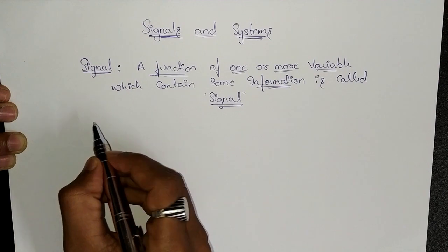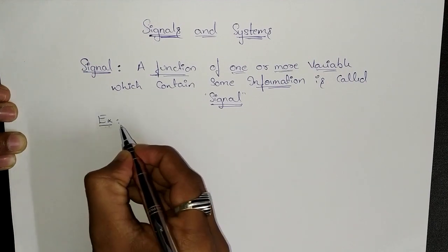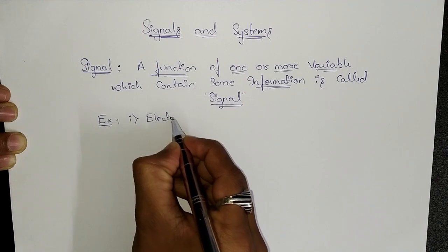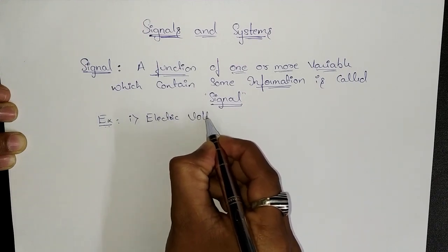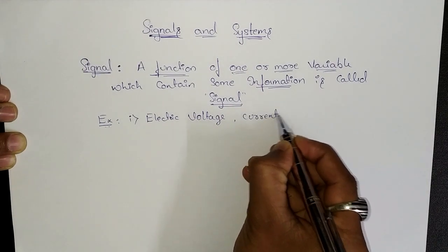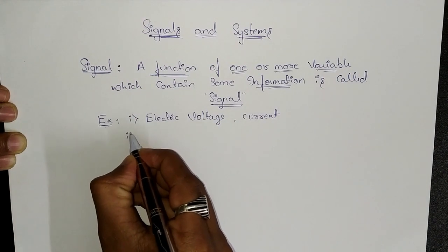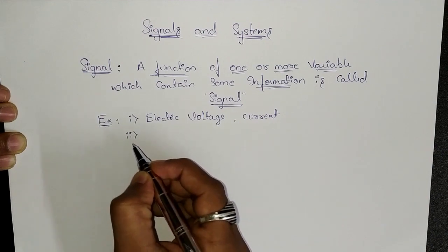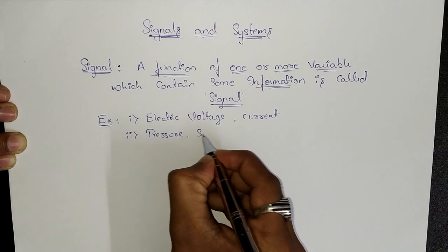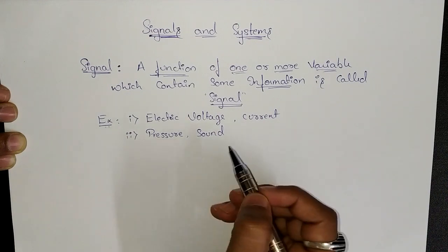It would be better understood if we take some examples. Let us consider some examples for signal. First: electric voltage or current is a signal. Some non-electric quantities like pressure and sound are also signals which carry some information.